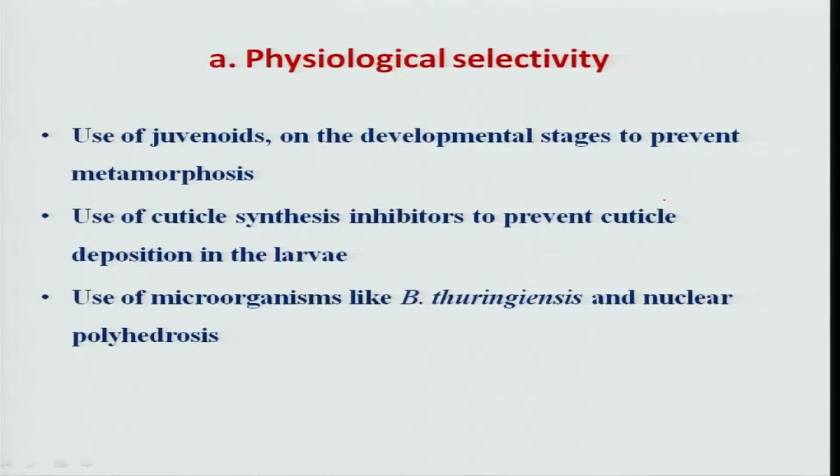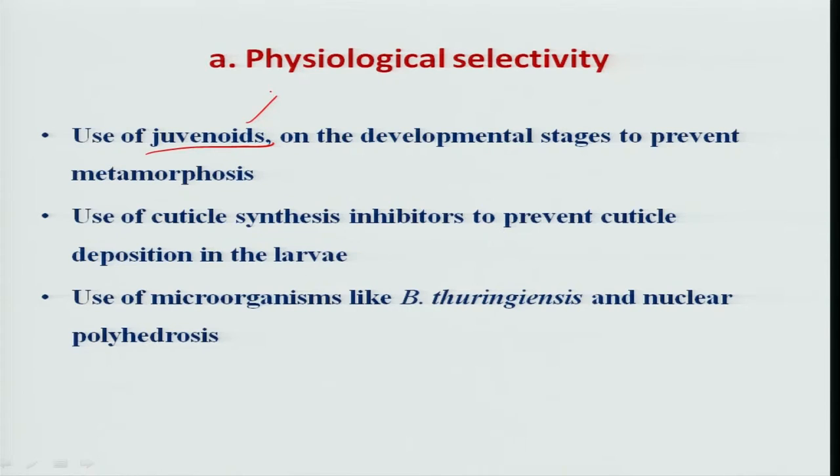Coming to the first one, physiological selectivity of insecticides — insect growth and development includes some hormones. Particularly, the juvenile hormone is very much required in maintaining the juvenility of the insect, particularly in larval development. If any compound interferes in its synthesis, the insect growth is affected. Commercially synthesized juvenoids which interfere with the synthesis of juvenile hormone are available, thereby affecting molting to the next stage. Commercially, many juvenoids are available as insecticides for use.